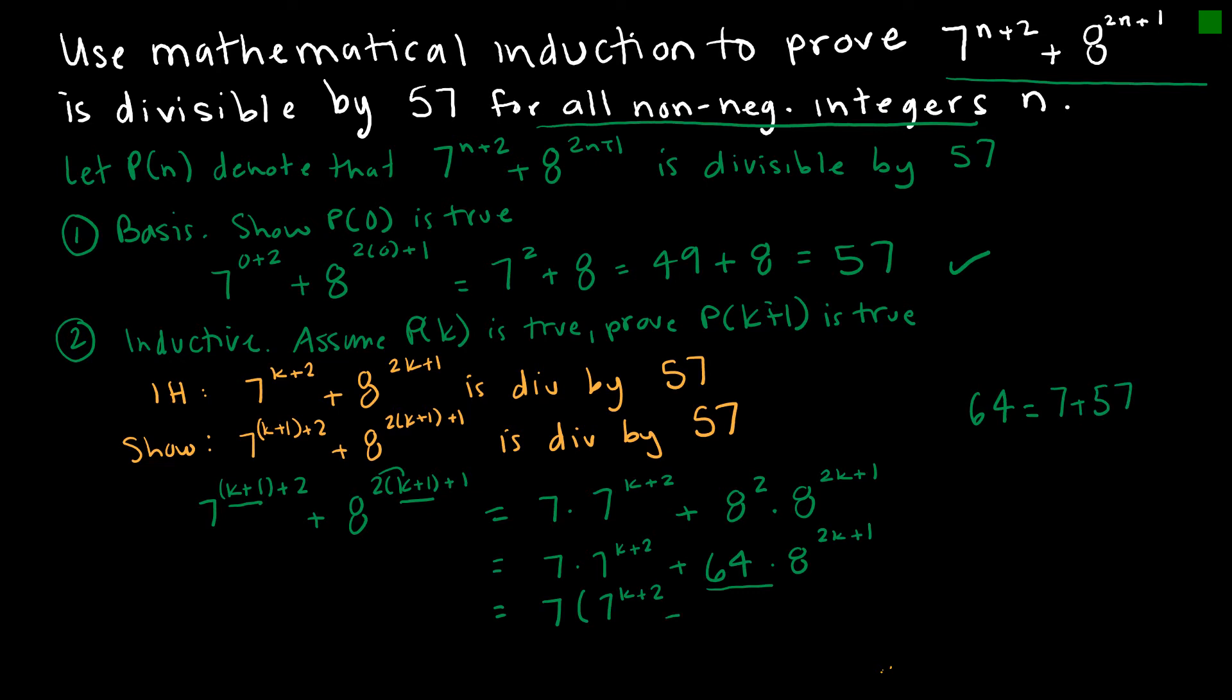If I add those up, I get 64. Then I can say, this is 7 times 8^(2k+1), and then what do I have left over? I have 57 times 8^(2k+1) left over.